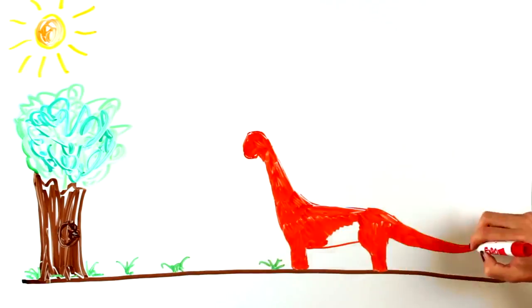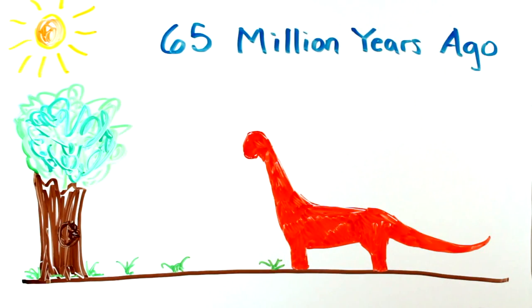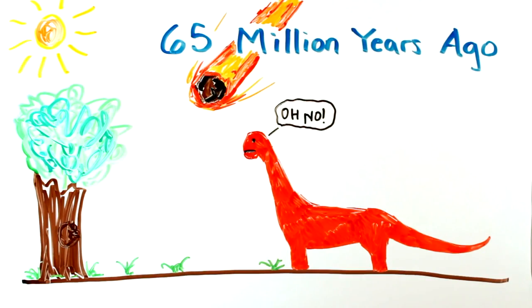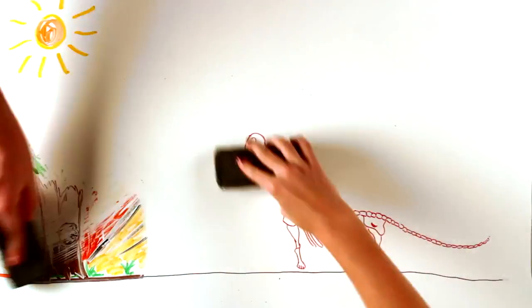On a pleasant day in the Cretaceous, about 65 million years ago, a 10-kilometer asteroid collided with the Earth and wiped out most of the life on its surface, including the dinosaurs.